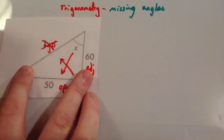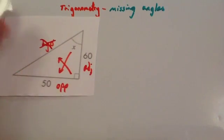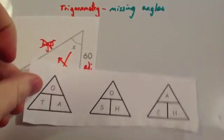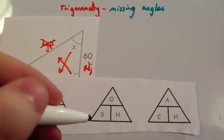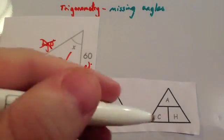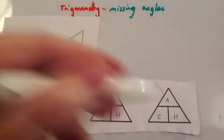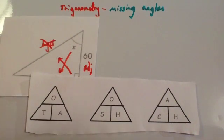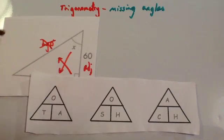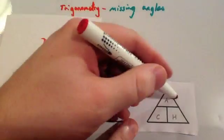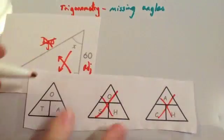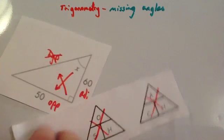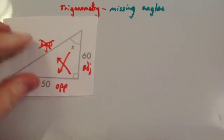Here, the hypotenuse isn't given to you. So you go to your triangles — your 'Two Old Angels'. Two Old Angels, skipped over heaven, carrying a harp. If you want more information on this, watch the other videos. We don't want a triangle with an H in it, so we cross off the triangles containing H. We're going to be using 'Two Old Angels'.